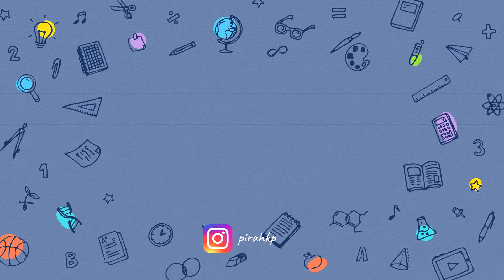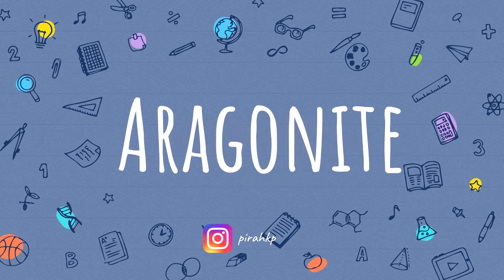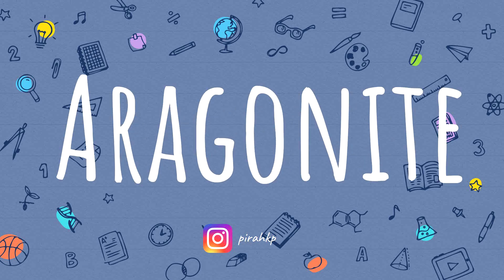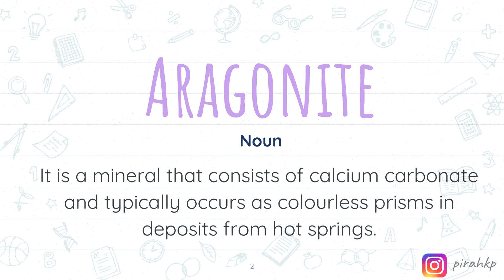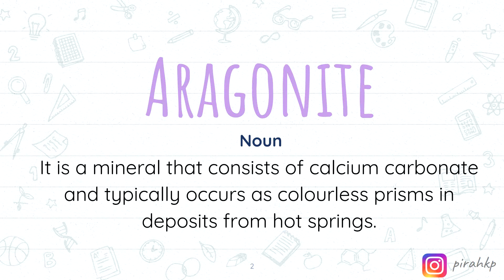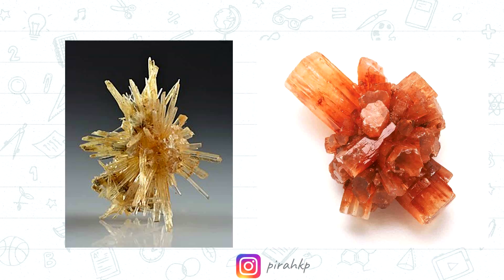Hey guys, it's me Prey and today's word of the day is Aragonite. It is a noun and it is basically a mineral that consists of calcium carbonate and typically occurs as colorless prisms in deposits from hot springs. So basically it's a stone, it's a mineral that I will show you right now and that is called Aragonite.